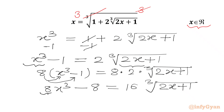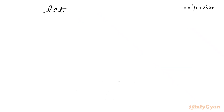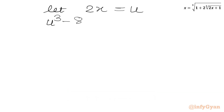Now we know that 8 is 2 cubed, so we can write 8X cube as 2X whole cube. We can write this term as 2X plus 1. Now we can use the substitution: let 2X equal to U. So our equation will be in variable U: U cube minus 8 equal to 16 times cube root of U plus 1.